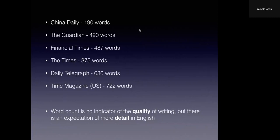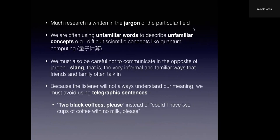We can see there's a lot more detail expected in English. We need to address concerns and questions the audience might have. When it comes to jargon — a lot of our research is written in the jargon of a particular field. Academic research is often written for other academics, dealing with theoretical ideas and difficult scientific concepts like quantum computing. We have a lot of unfamiliar words and unfamiliar concepts, so we need to take special care when explaining these.